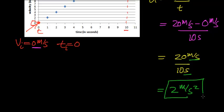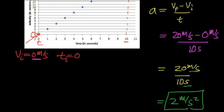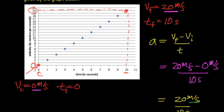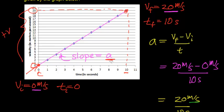So the velocity of this object is increasing by 2 meters per second every single second. A further way to confirm this: my acceleration was positive, which means a positive slope. The slope of the line connecting all the points represents the acceleration of this object. With positive velocity and positive acceleration, that confirms the object's velocity is increasing.